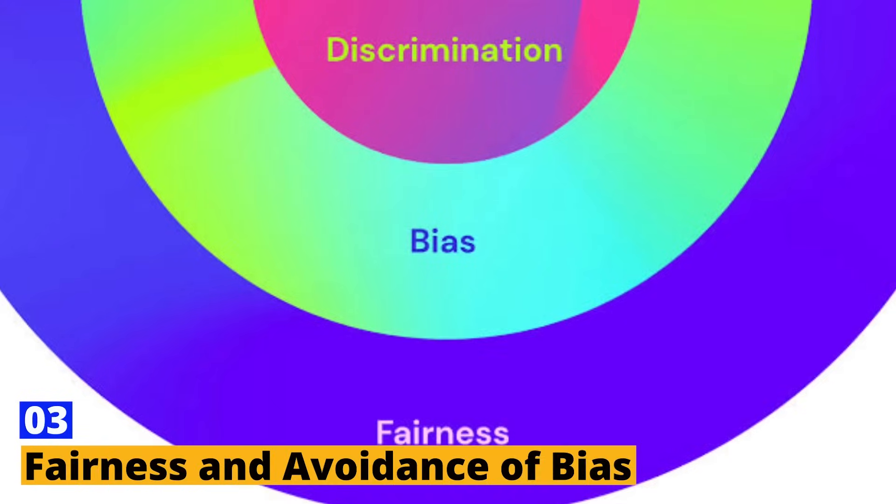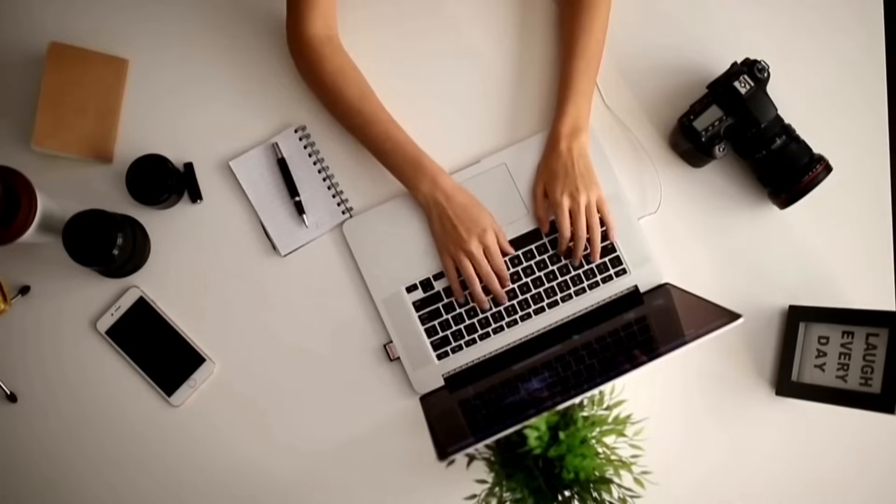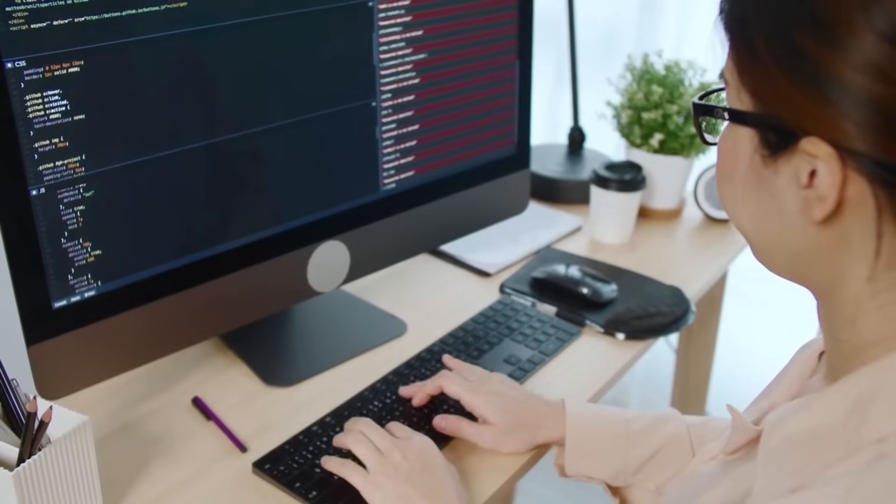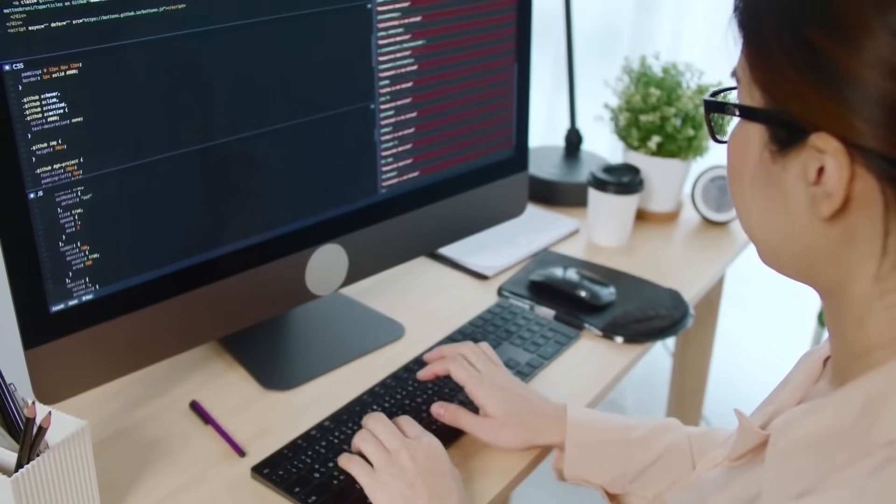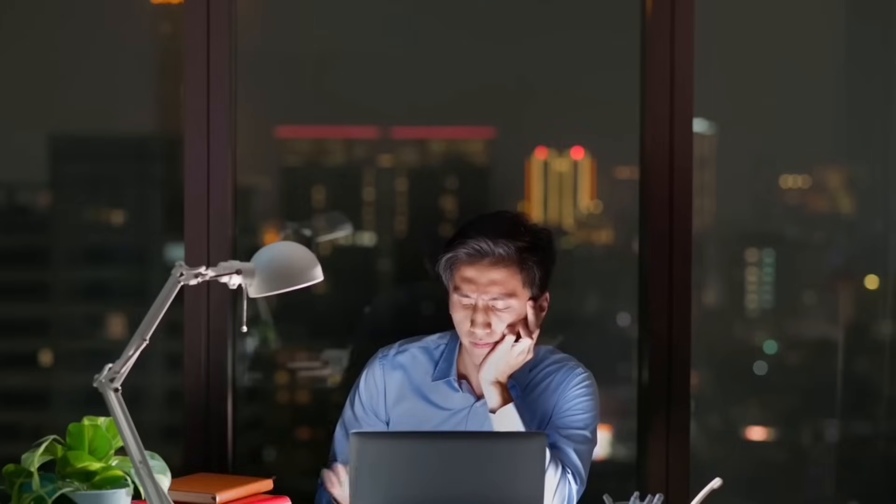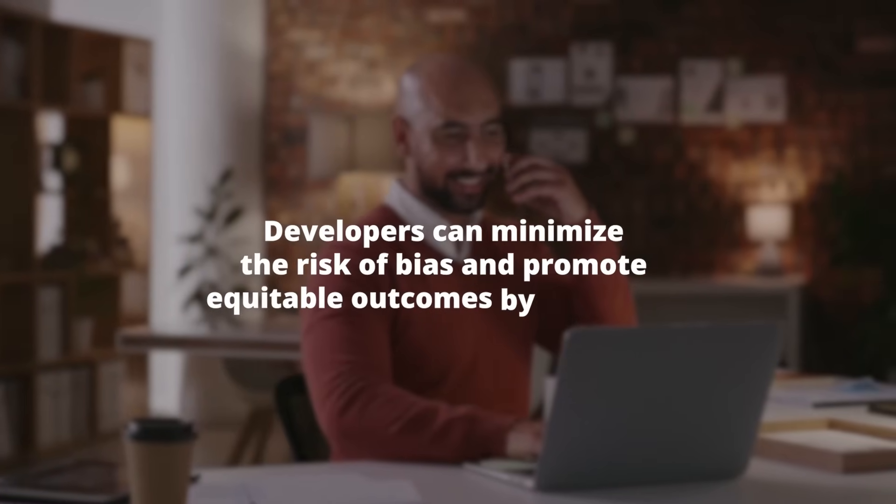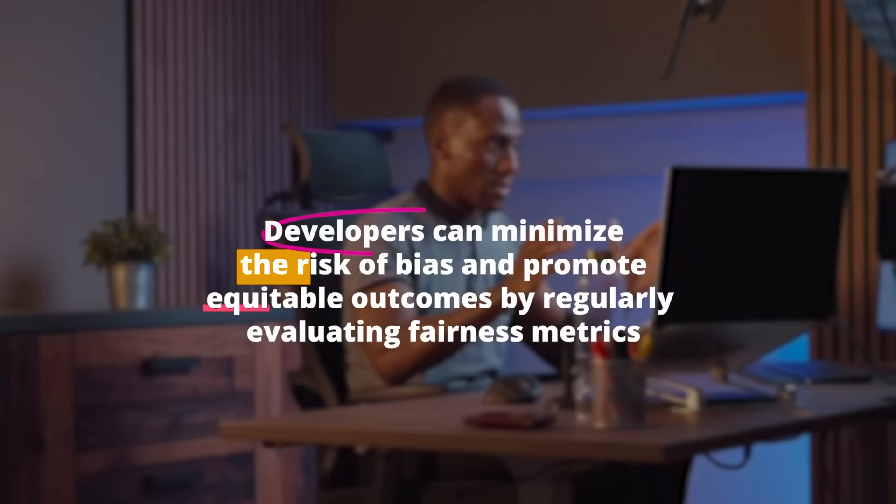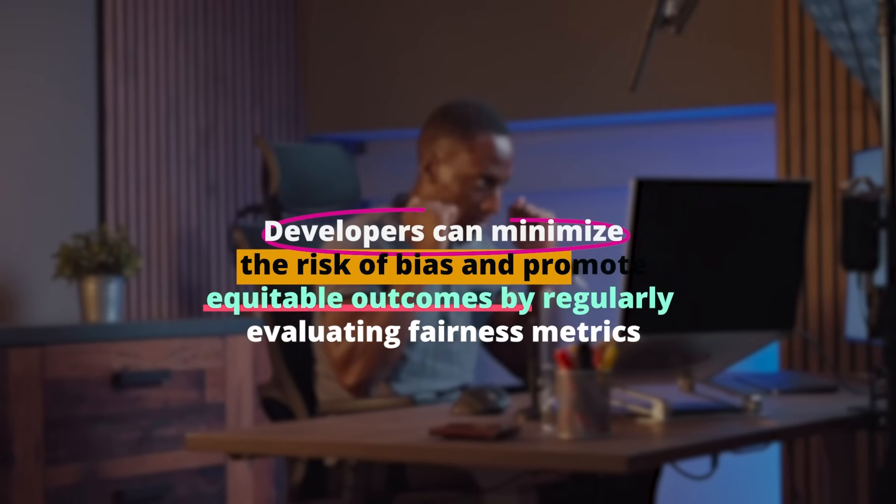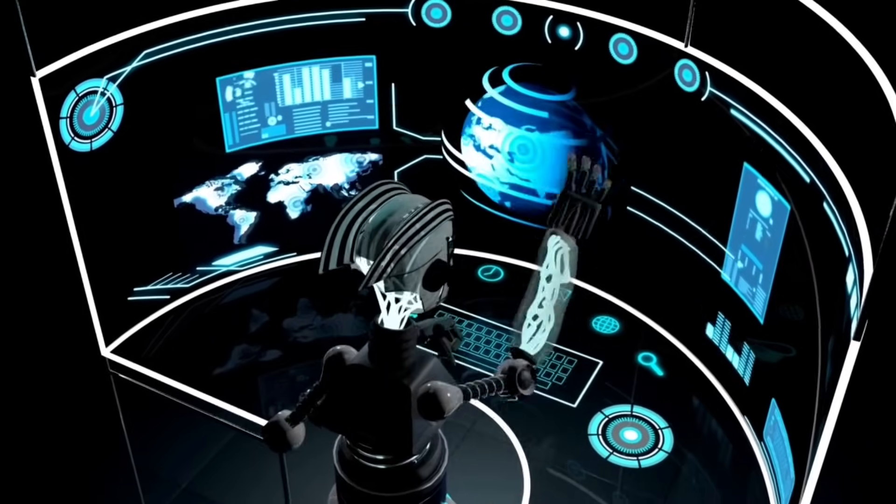Fairness and Avoidance of Bias. Ensuring fairness in AI is a constant effort that involves consistently monitoring and evaluating its impact. It is important for developers to incorporate methods to evaluate the fairness of AI systems. This includes conducting tests to identify any potential biases that may affect different demographic groups, and actively seeking input from the communities that are impacted by these systems. Developers can minimize the risk of bias and promote equitable outcomes by regularly evaluating fairness metrics and iteratively improving AI ethical models.